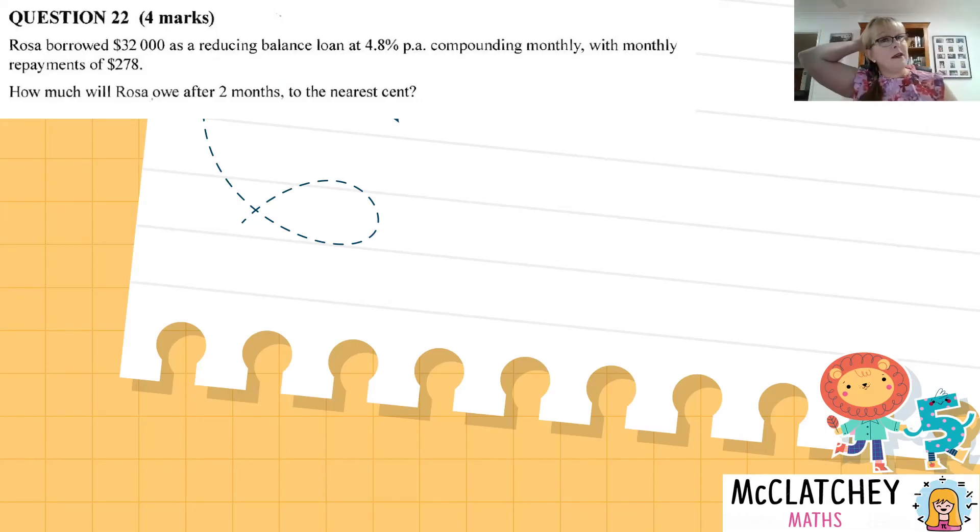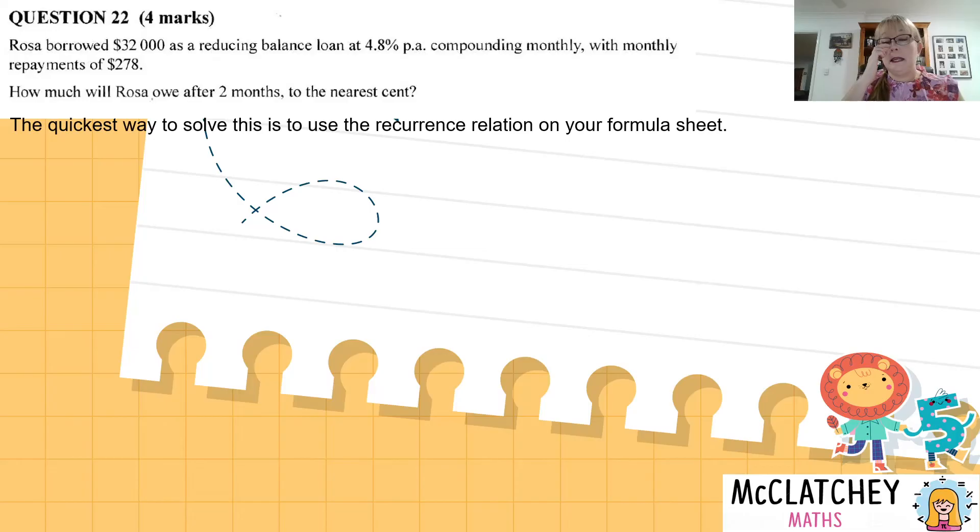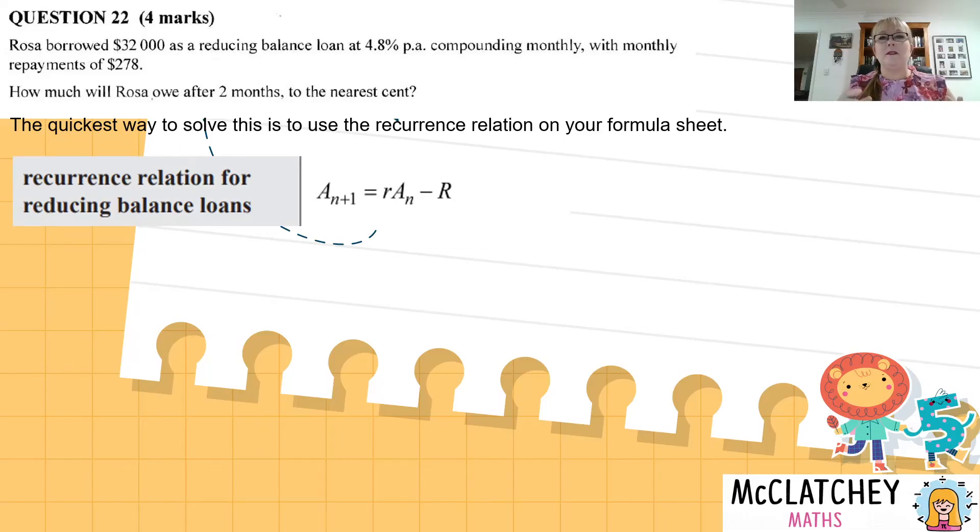And here's the last question on this paper on financial mathematics. Rosa borrowed $32,000 as a reducing balance loan, another reducing balance loan at 4.8% per annum compounding monthly with monthly repayments of $278. How much will Rosa owe after two months to the nearest cent? Now you can actually jump in and use your annuity formulas again for this, but I actually think it's a lot quicker and a lot easier to actually use your recurrence relation on your formula sheet. And that's why understanding when you use each formula is really important. So in this particular situation, the recurrence relation looks like this. And what it helps us do is work out the balance at the end of a certain number of payments. We've only got to work it out after two payments. So that's pretty easy.